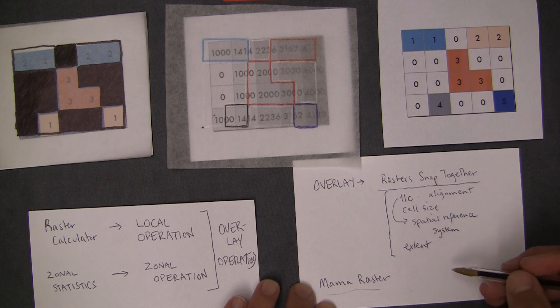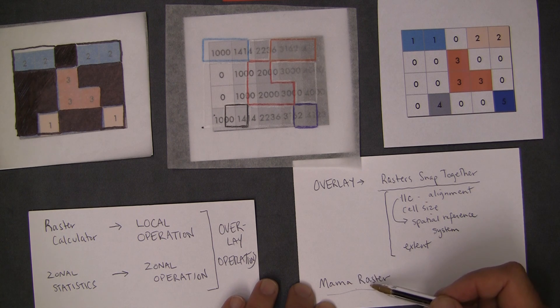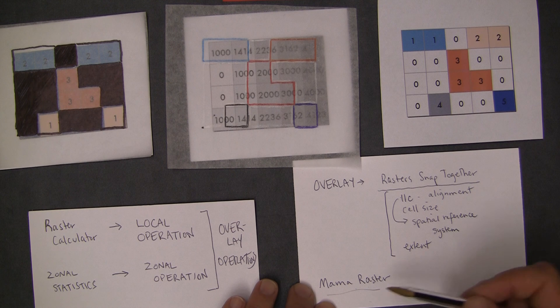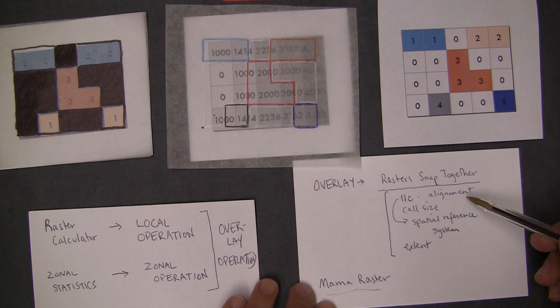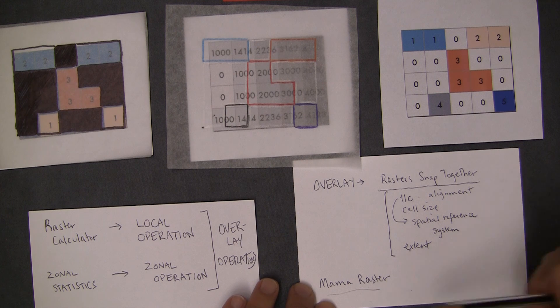The mama raster is basically saying that we're going to pick a raster who's going to be kind of like mom, who's always providing the spatial structure for all of the kids. And the kids are basically always going to be made from the mom.